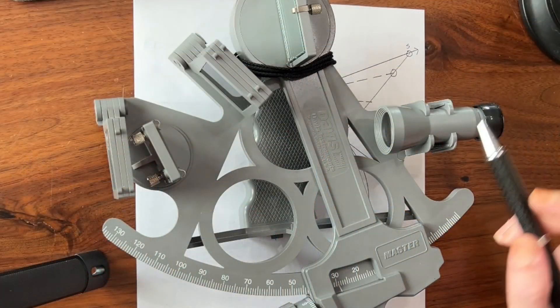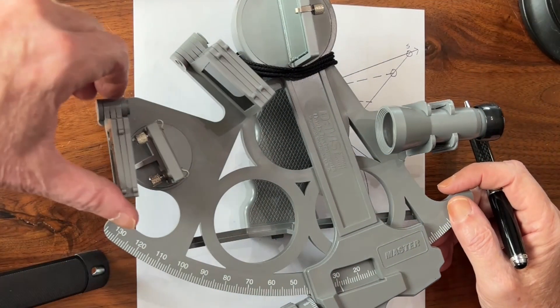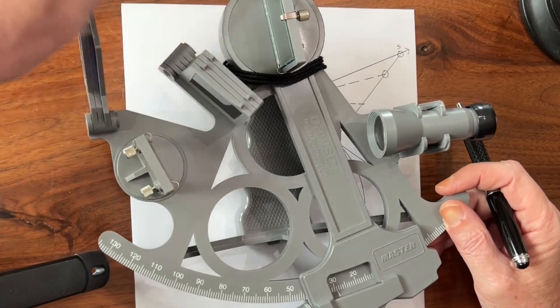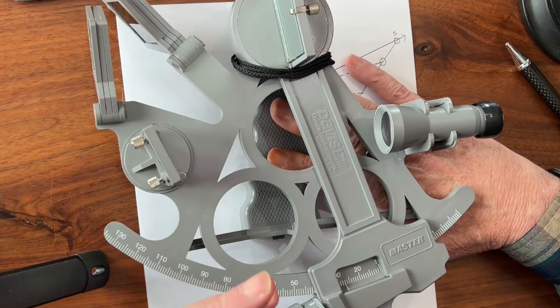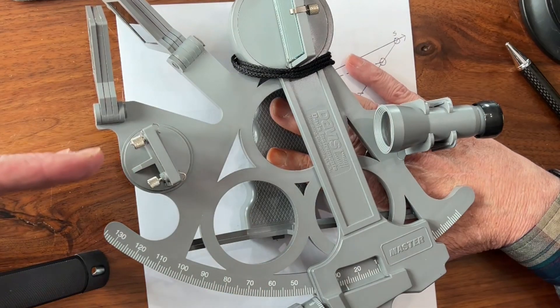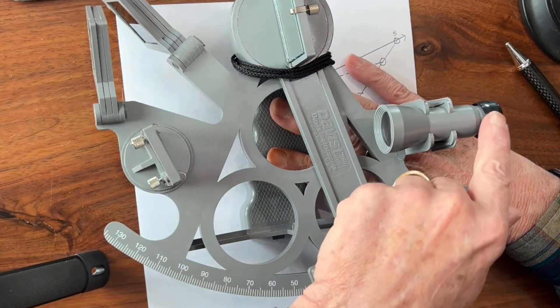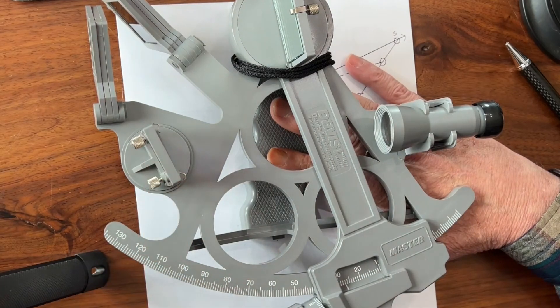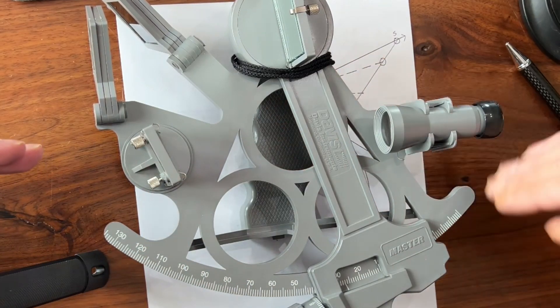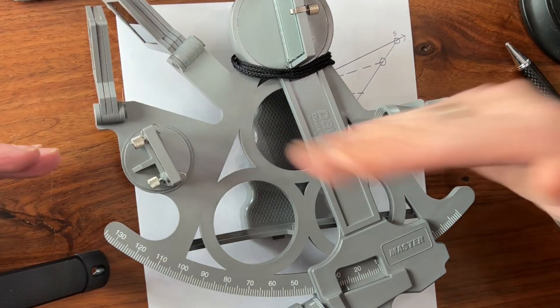Now the purpose of a sextant is to measure angles, and for that it has an interesting system of mirrors. Let's bring these filters up for a second. Now when you're looking at an object like, say, a horizon, what happens is the horizon is out here, and you look through the telescope, through this horizon mirror, out to the horizon, and that forms one line of your angle.